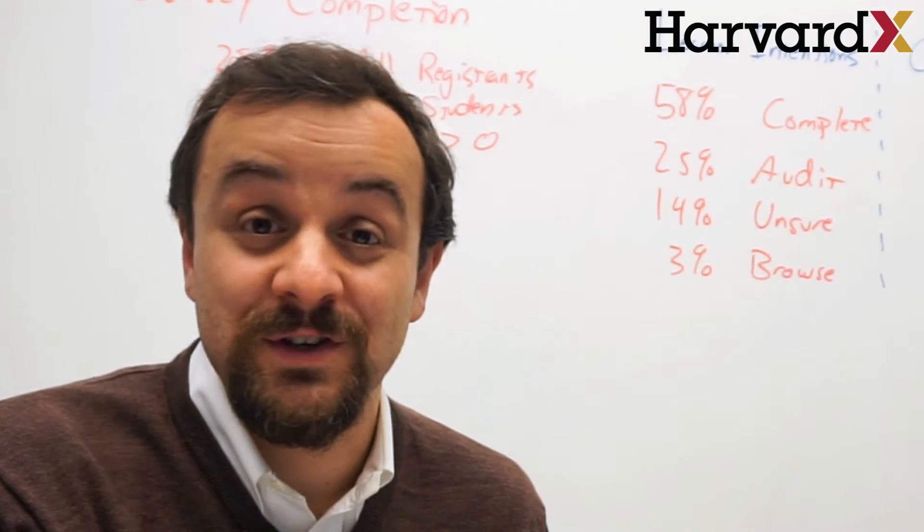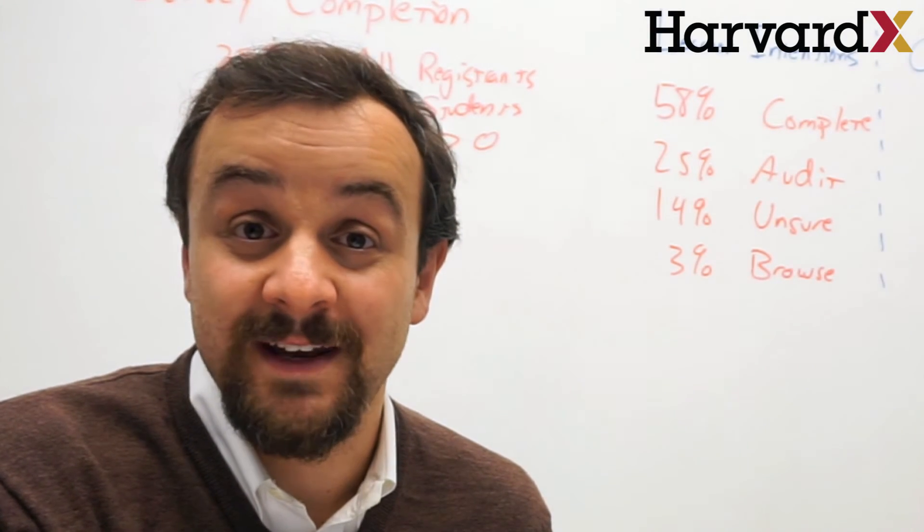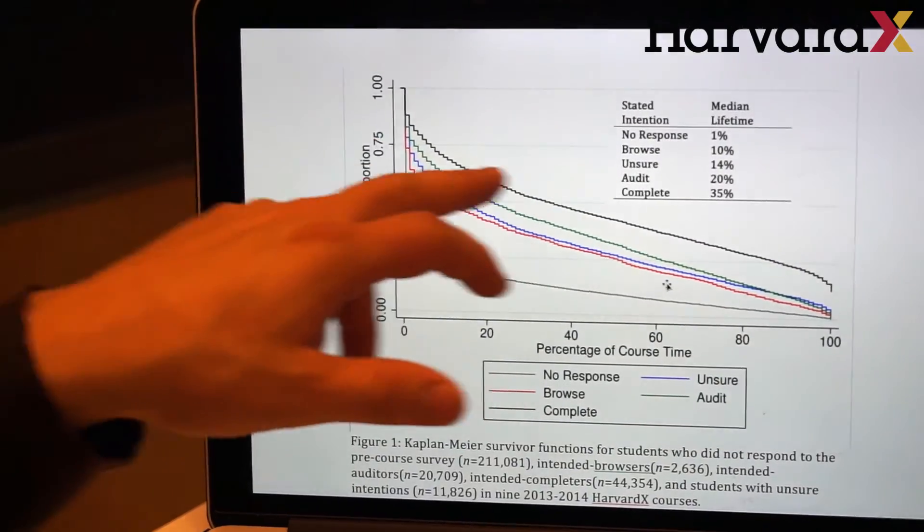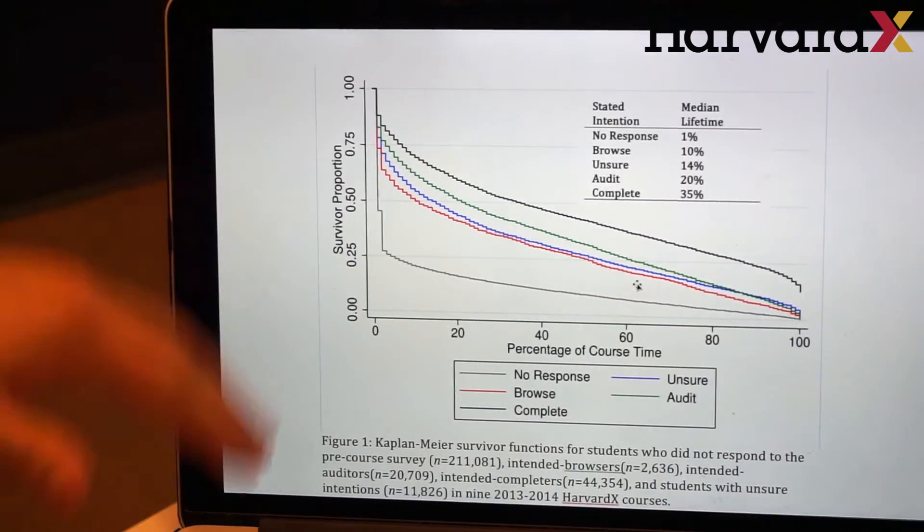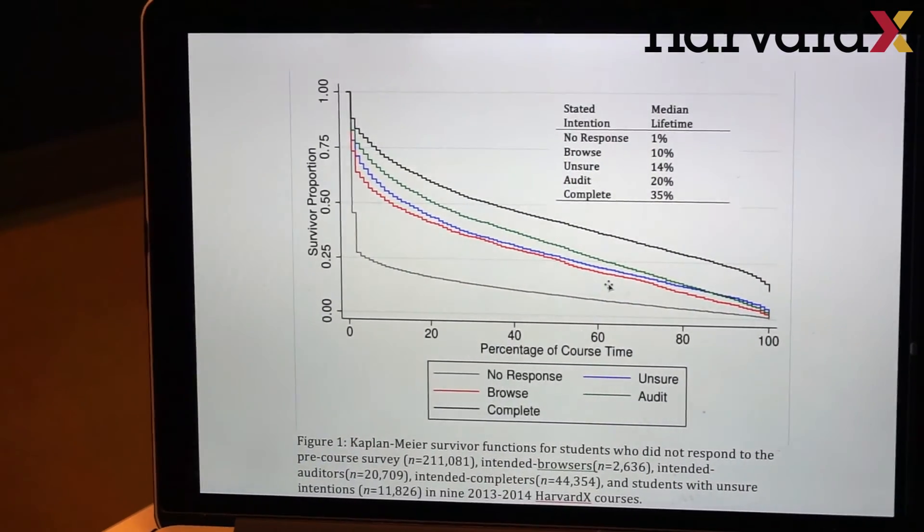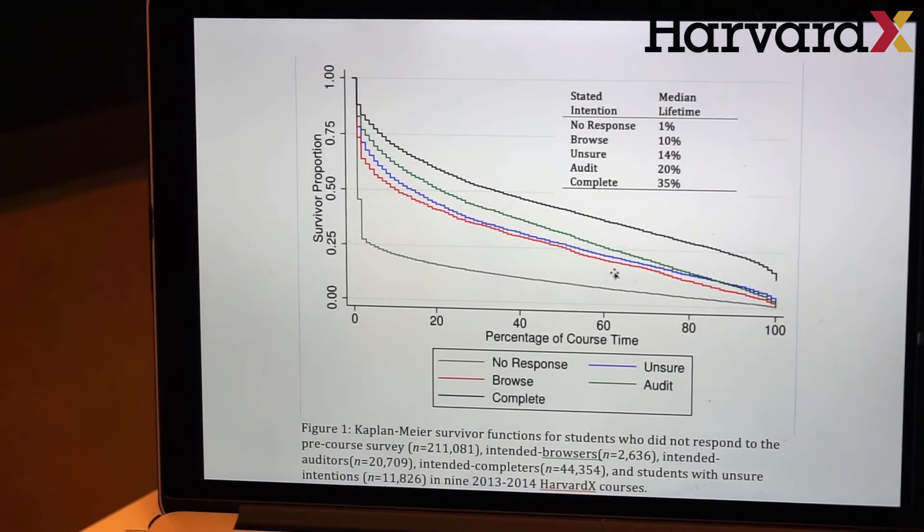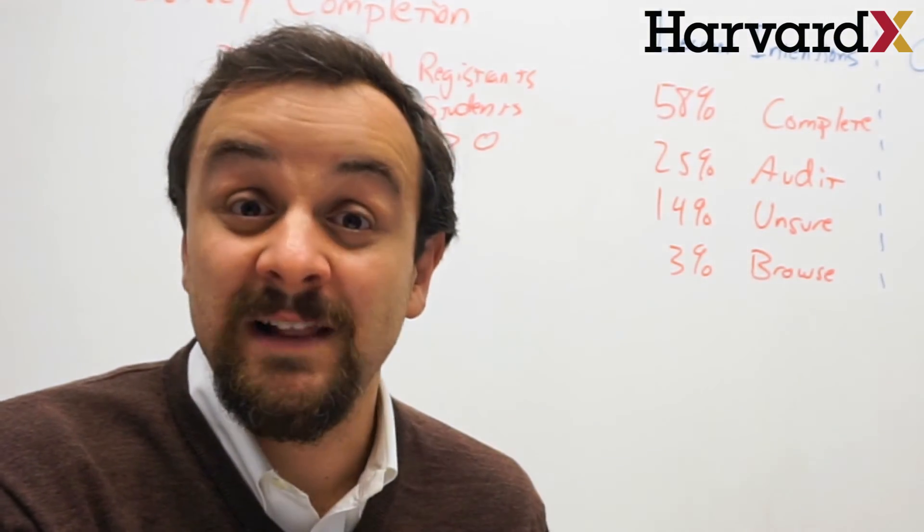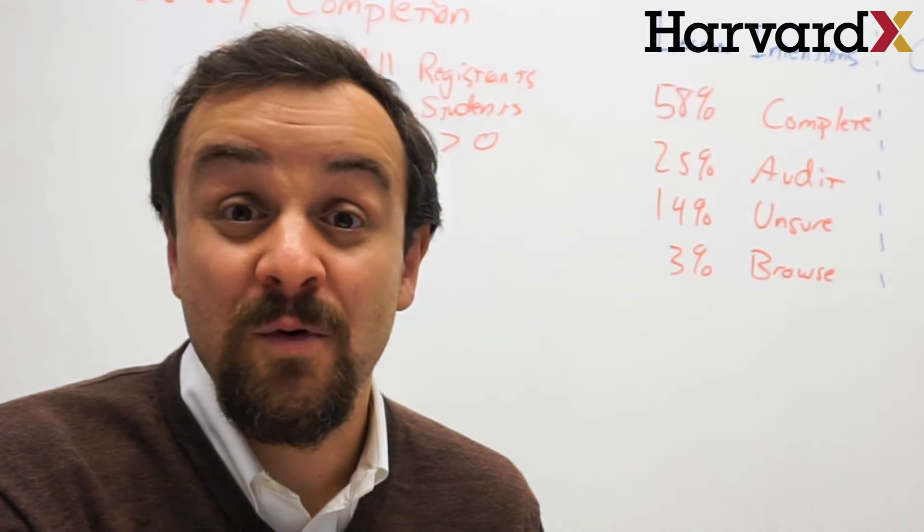The third big takeaway from the research, which confirms what we found in other settings, is that the early parts of the course is when the highest attrition happens. Regardless of what people stated intentions are, early in the course is when most of the people who sign up for the course are deciding not to persist. I think this has some real implications for course design.